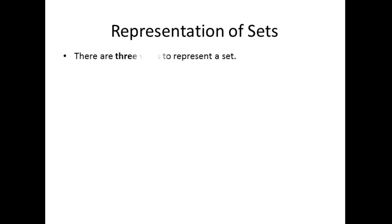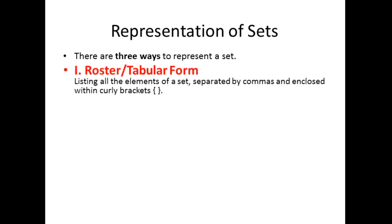There are three ways to represent a set. The first way is using the roster or tabular form — this is listing all the elements of a set, separated by commas and enclosed within curly brackets. That is how we write a set in roster or tabular form.